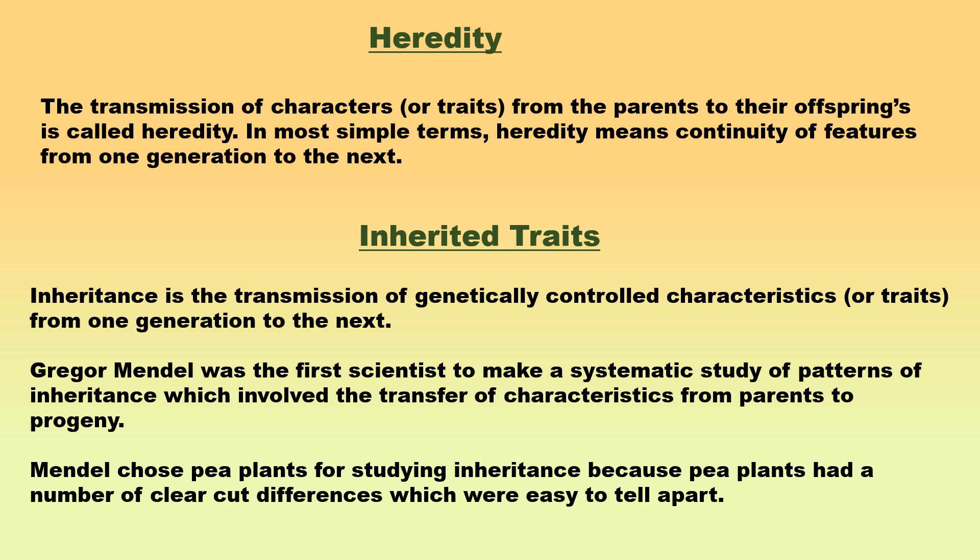Some of the characteristics or traits of the pea plants whose transmission to progeny was investigated by Mendel were: height of pea plant or length of stem — tall or dwarf; shape of seeds — round or wrinkled; and color of seeds — yellow or green. Yet another contrasting characteristic investigated was color of flowers — white or violet. Mendel chose pea plants for studying inheritance because pea plants had a number of clear-cut differences which were easy to tell apart.